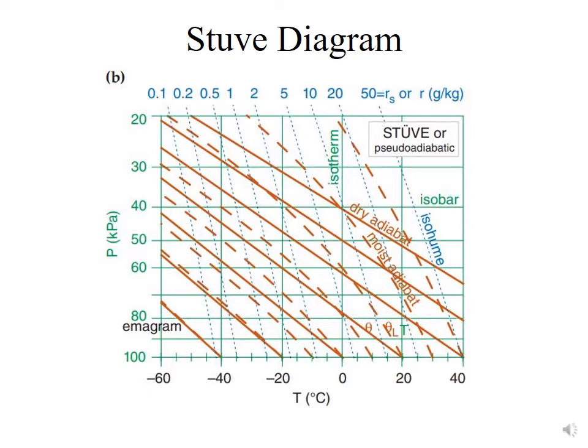Isobars, the lines of constant pressure, are straight and horizontal. The dry adiabats are also straight and have a 45-degree inclination to the left, while the moist adiabats are curved. Wind barbs are often plotted on the side of the diagram to indicate the winds at different heights.